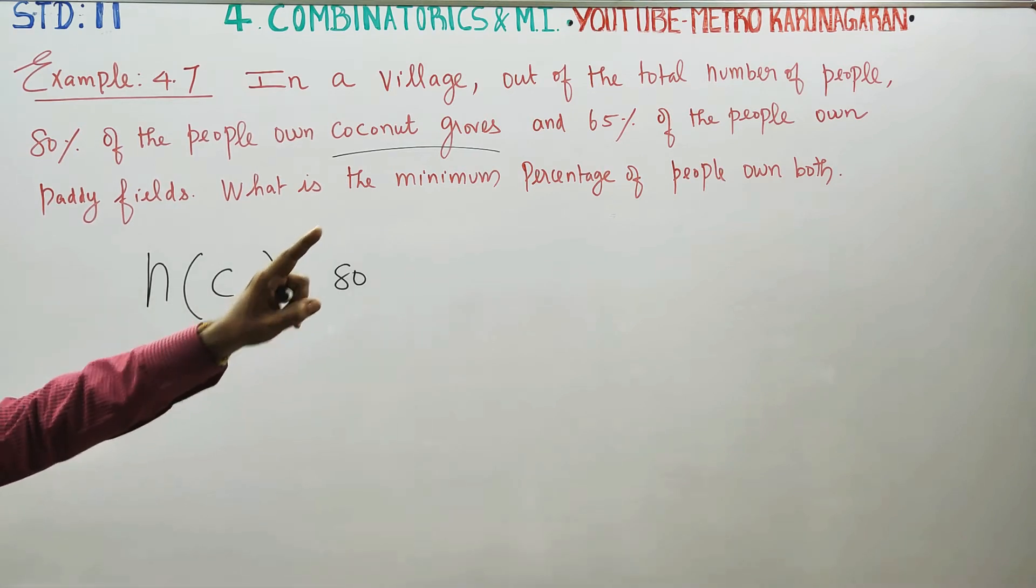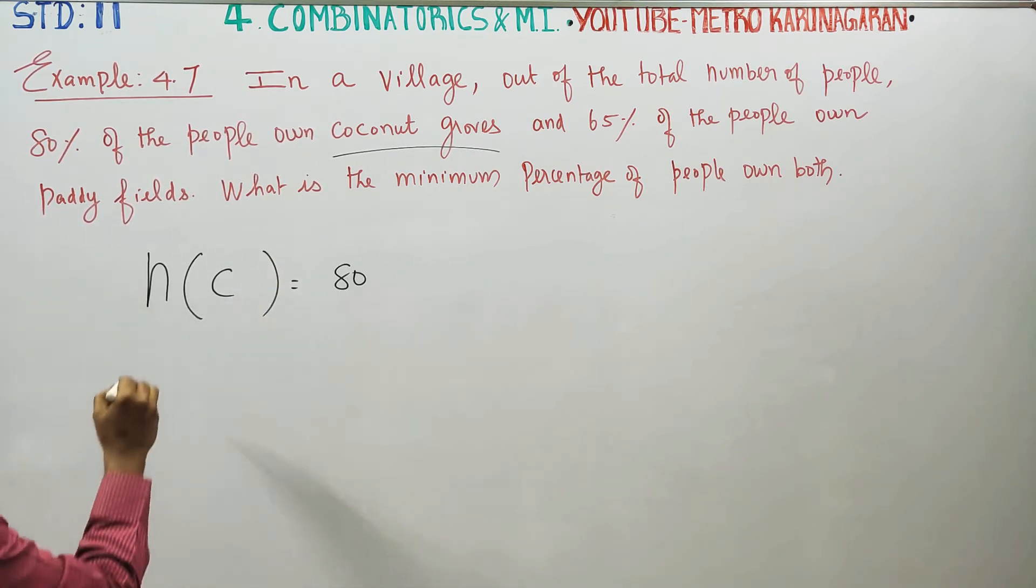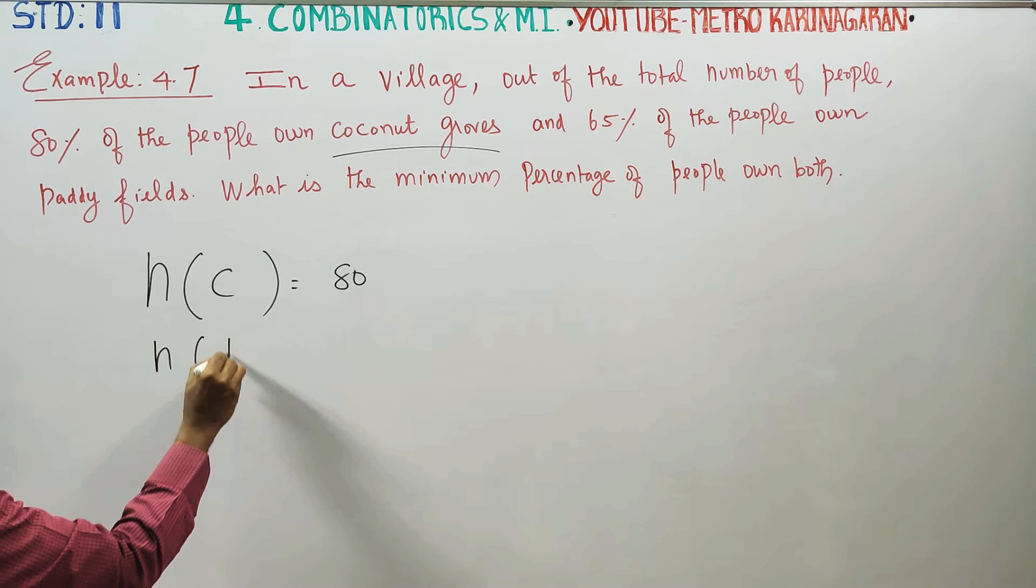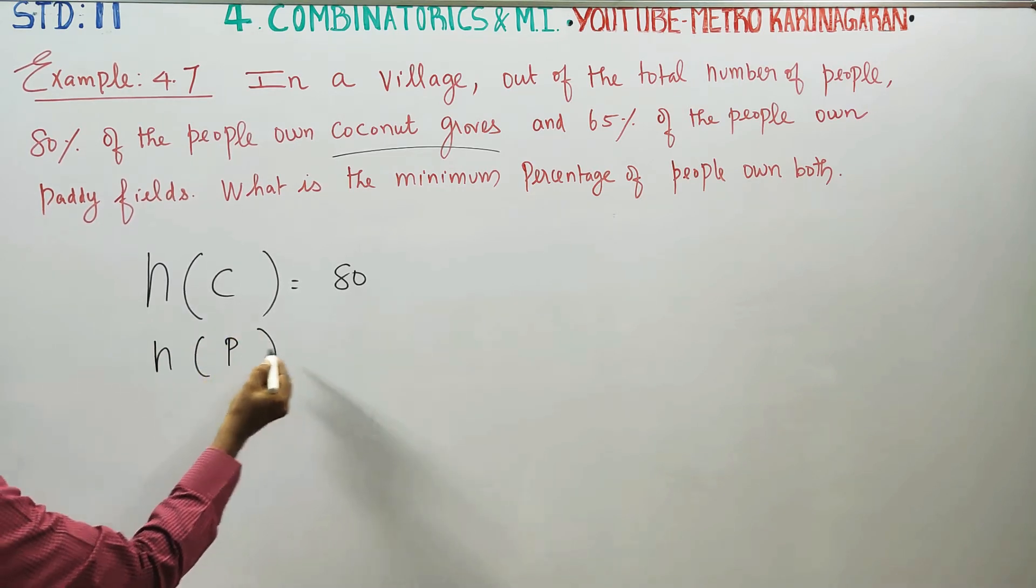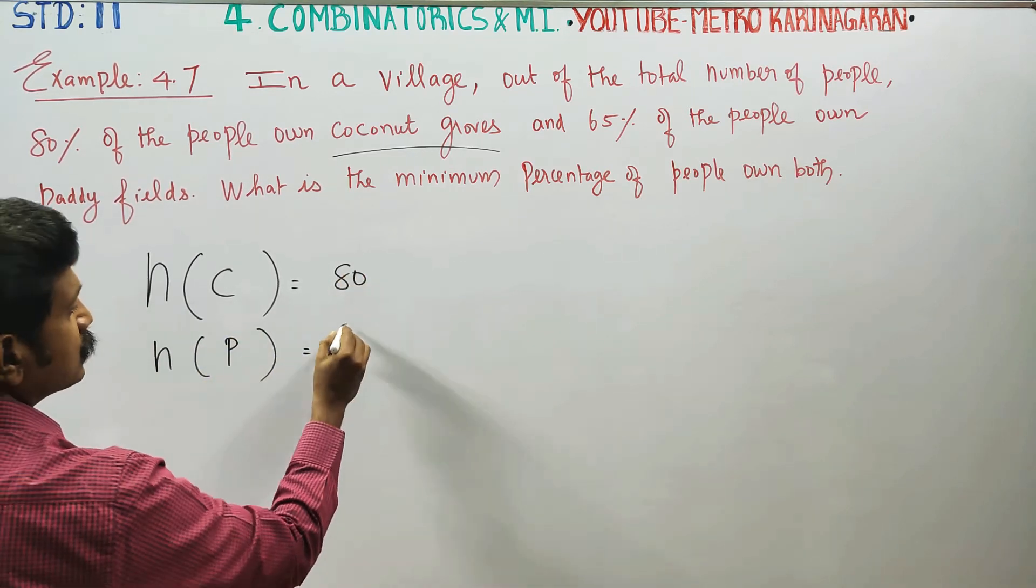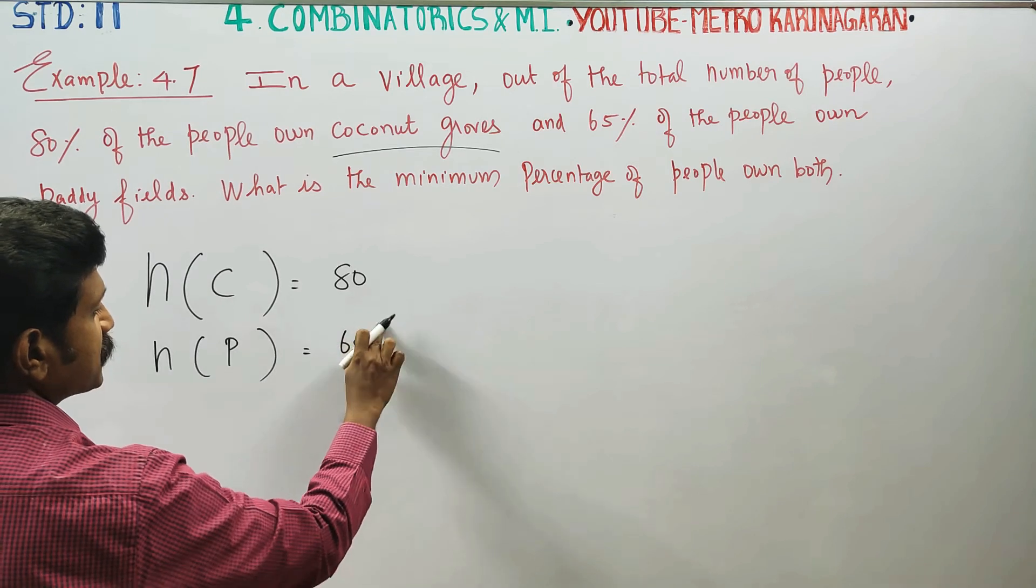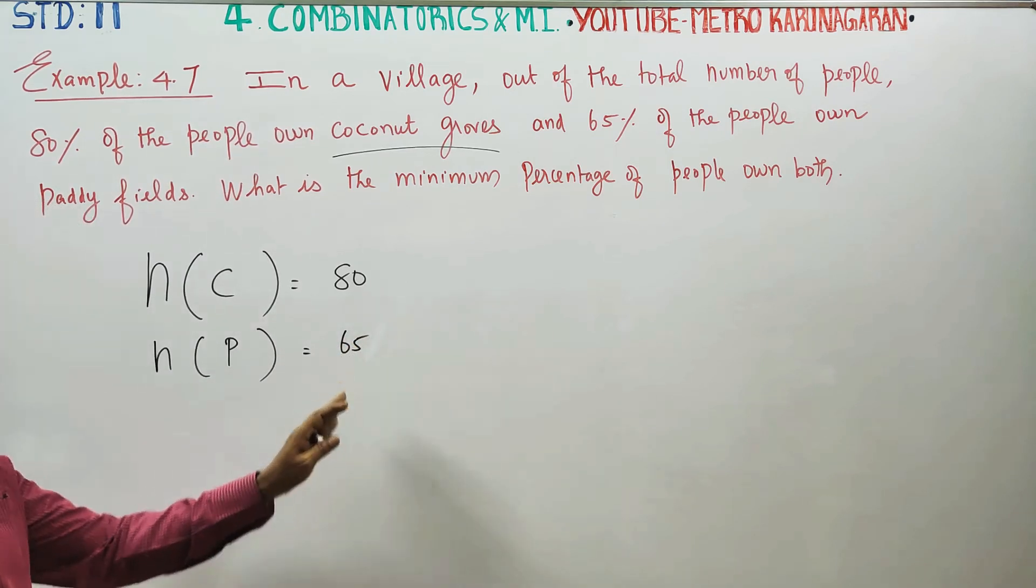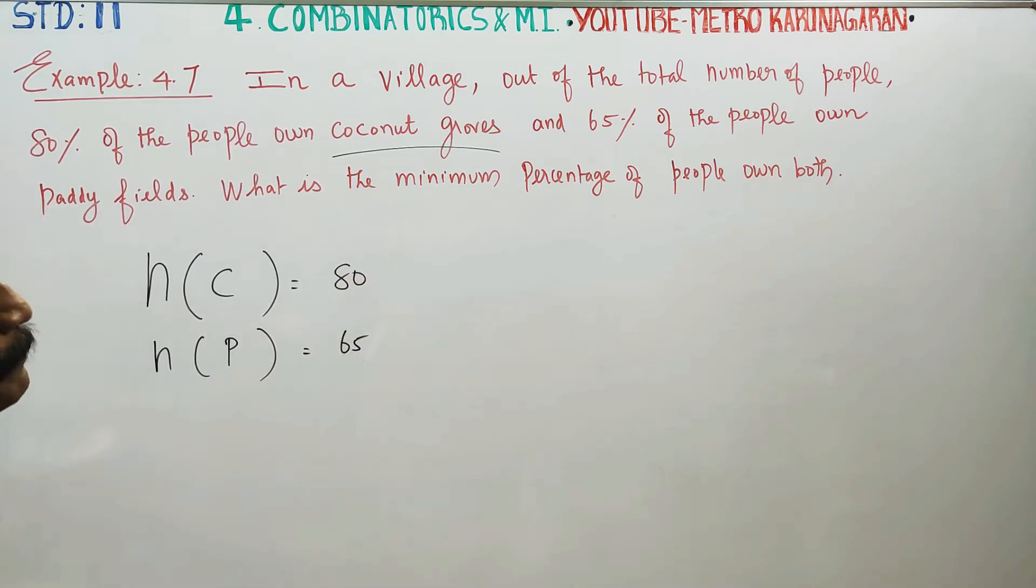Next, 65% of the people own paddy fields. Number of people having paddy, P for paddy, is equal to 65% by 100.